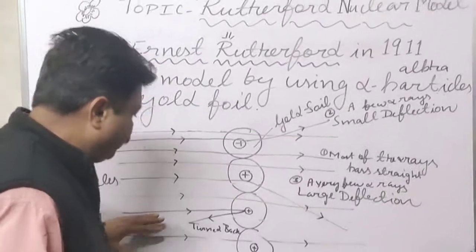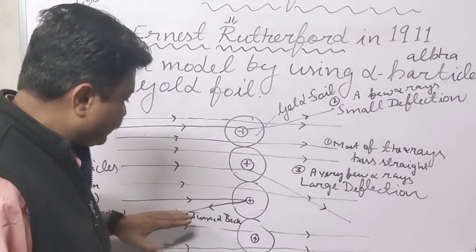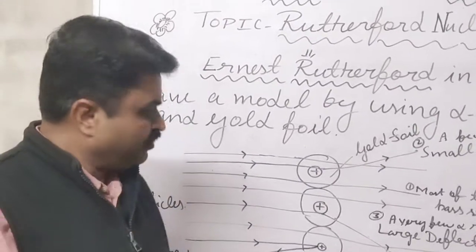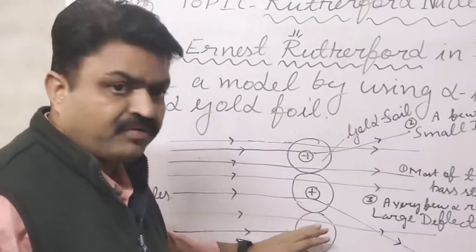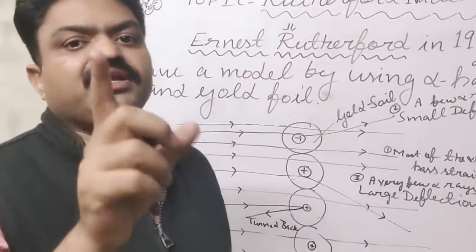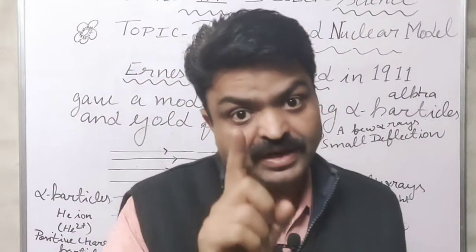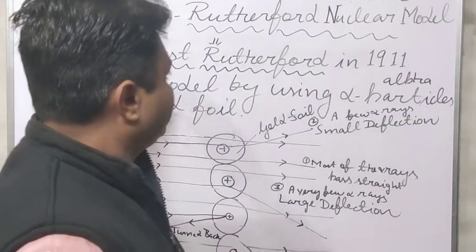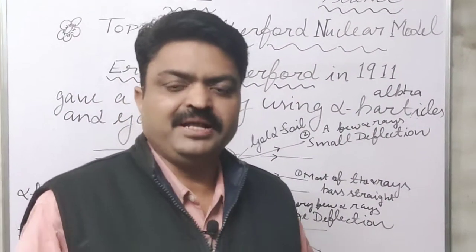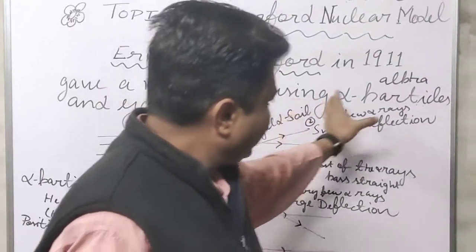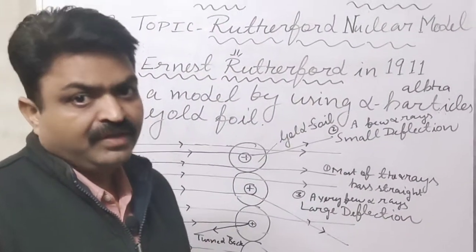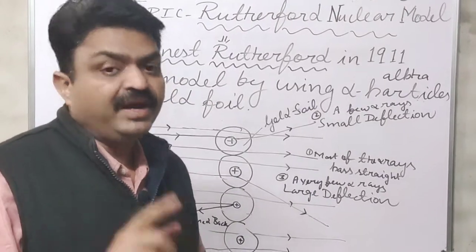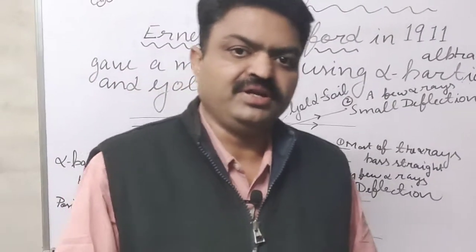He also found that some alpha particle rays are turned back. With this experiment, he discovered the nucleus of the atom. The nucleus of the atom was discovered by Ernest Rutherford using alpha particles and a gold foil, and with this experiment he gave one model known as the Rutherford nuclear model.